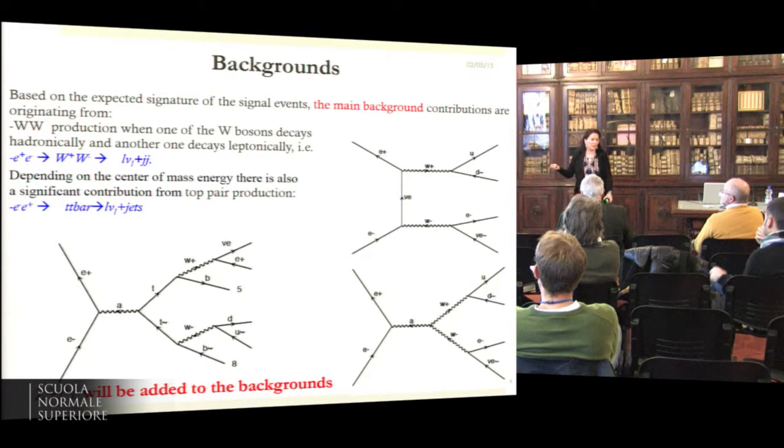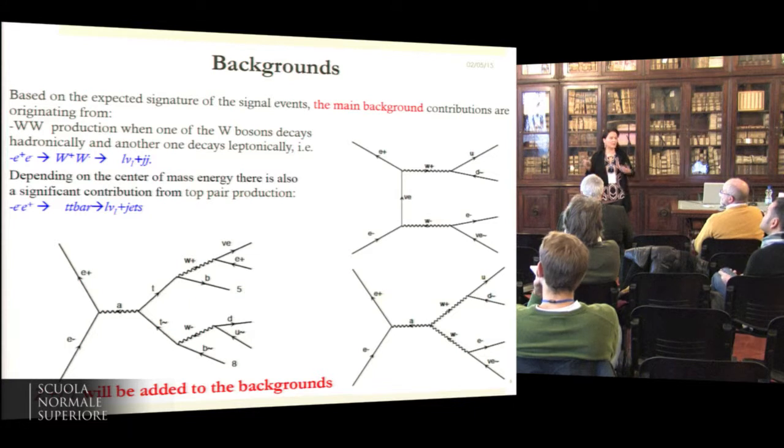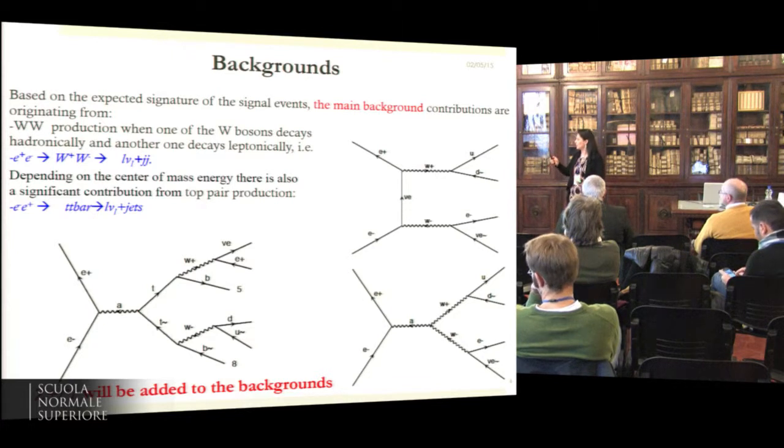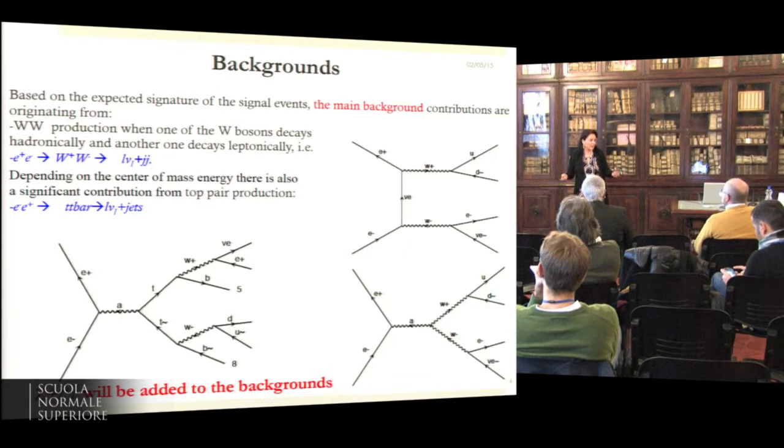From the experimental point of view, this study considers various backgrounds. The study has been done for different center of mass energies, so depending on the center of mass energy you have or not all these backgrounds—there is the WW production that is present everywhere, and at higher masses you open up the TT bar production which becomes an important background.